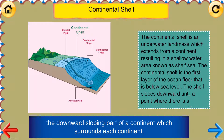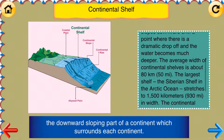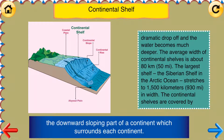Continental Shelf: the downward sloping part of a continent which surrounds each continent. The continental shelf is an underwater landmass which extends from a continent, resulting in a shallow water area. It is the first layer of the ocean floor that is below sea level. The shelf slopes downward until a point where there is a dramatic drop-off and the water becomes much deeper. The average width of continental shelves is about 80 kilometers, or 50 miles.